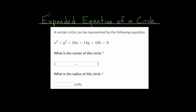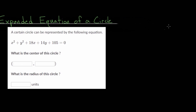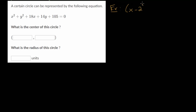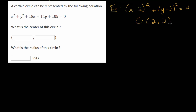In this video, I'd like to talk about the expanded equation of a circle. Before we look at the specific example problem, let's consider the standard equation for a circle. So let's say we have x minus 2 squared plus y minus 3 squared is equal to 4. You might recognize that this circle has a center at the coordinate and it has a radius of 2.